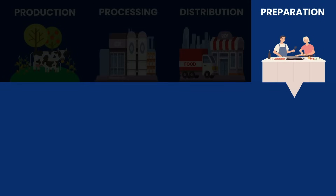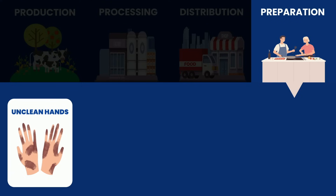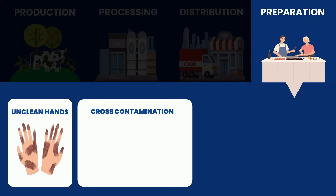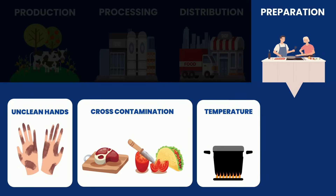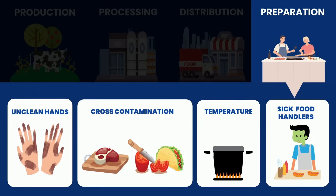Contamination at the preparation stage could be due to not washing hands before food preparation, cross-contamination — for example, if the same knife is used for cutting raw meat and to prepare food that's not going to be cooked — not cooking food to the right temperature, or from sick food handlers.